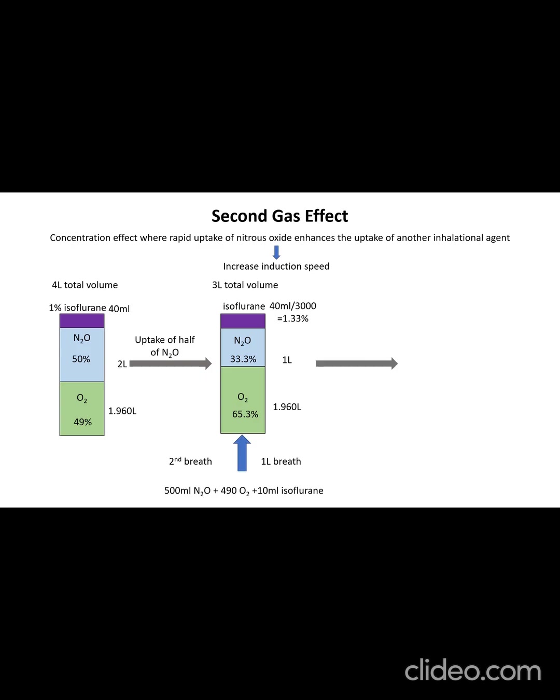Therefore, the new alveolar concentration of isoflurane is 1.25%. This is the augmented gas inflow part, where despite administering 1% isoflurane, the concentration of isoflurane in the alveoli is more than 1%.